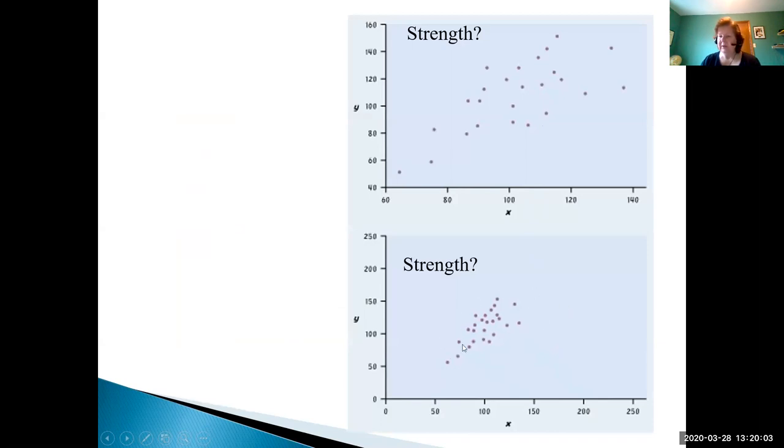In class we would have had the discussion that potentially the one on the bottom looks stronger because the data points seem closer together, and the one on the top maybe not quite as strong because they seem to be spread out. But if we actually take a look at the vertical axes, in the lower graph it starts at zero, in the upper graph it starts at 40. So these two graphs are actually the exact same data set, they have the exact same strength. It's just changing the vertical scale changed our perception of what the strength is.